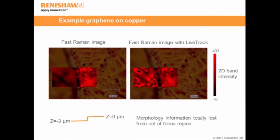Here we have a simple example — graphene grown on copper between two different copper grains, with a grain boundary running down the image. This first image is a simple fast Raman image without LiveTrack, and you can see that because we're out of focus on the left-hand side, we lose Raman intensity. We also lose a lot of spatial information, so we essentially lose all the morphology of the sample. This grain height difference is not very much — it's only 3 microns, a very small amount.